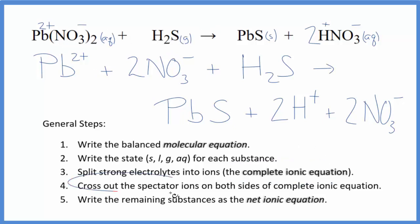Now we can cross out spectator ions. They're on both sides. I'm looking for something that's the same on both sides. Here in the reactants, I do have 2 nitrate ions. And in the products, I have 2 nitrate ions.